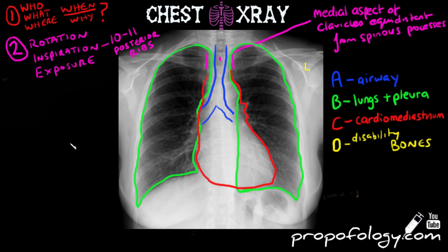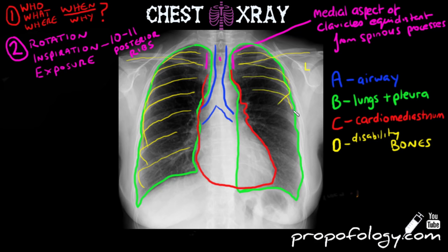Staying true to our ABCDE mnemonic, D stands for disability, which incorporates bones. You're going to try to trace the clavicles, look at the spinous processes in the midline, and then work through the ribs. Start at the top and work your way down, beginning at the posterior aspect of the ribs and working forward, looking for fractures or any displacement in all of these bones. Any fracture or displacement could imply damage to underlying structures.